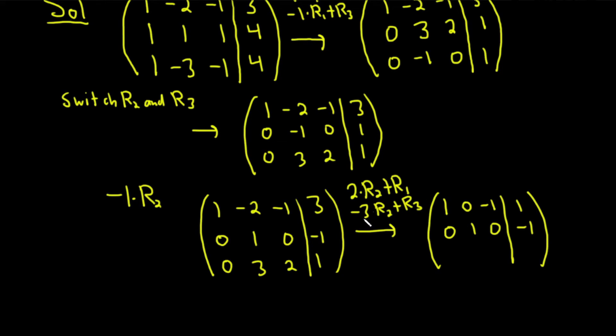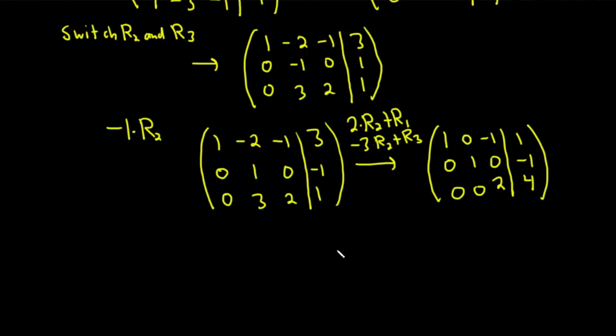Now we'll do negative 3 times row 2 plus row 3. 0 plus 0 is 0. Negative 3 plus 3 is 0. That's the whole point. 0 plus 2 is 2. Positive 3 plus 1 is 4. Getting there. We have like two more steps and we should be done with this example. So we're almost there.